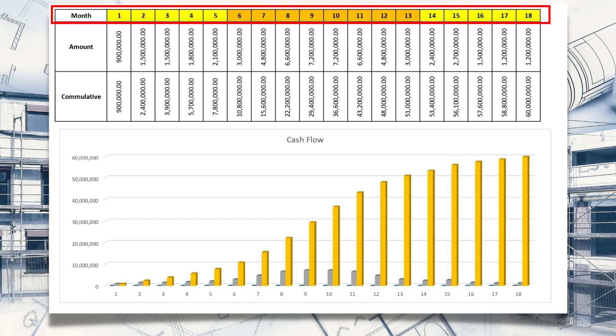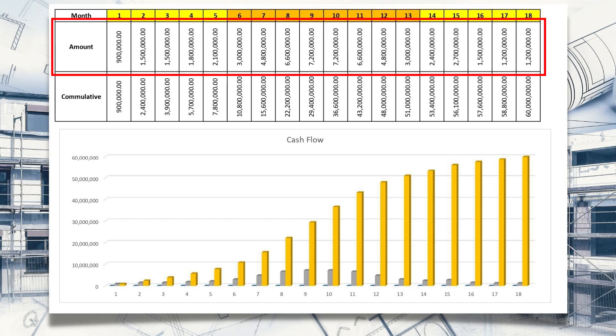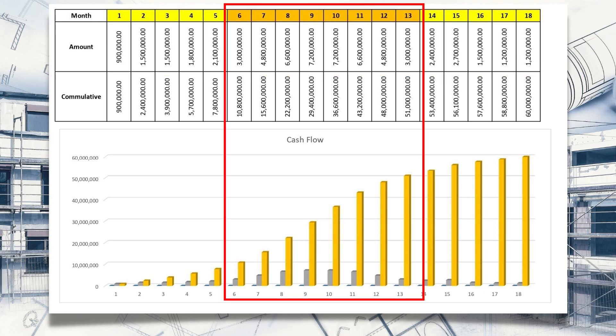Let me show you on screen an example cash flow. The duration of this project is 18 months. The second row shows the total worth of works executed month-wise. In month one we will execute 900,000; month two 1.5 million; month three 1.5 million. The values increase as the project progresses, reaching a peak in the middle — this is where the client is paying the most, or where the contractor is executing the most activities simultaneously.